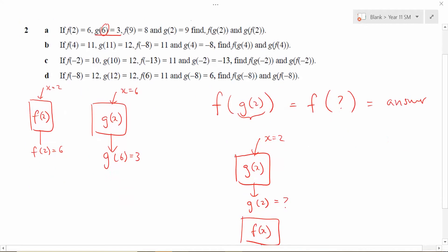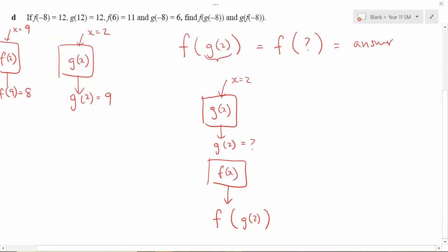And then similarly, they tell you that if you substitute nine into the f of x function, so if I put a nine into it, then I'm actually finding f of nine, which actually gives you eight. And then similarly, if I substitute x equals two into g of x, then I should get g of two, which is equivalent to nine. And conveniently, that now tells me that g of two should equal nine.